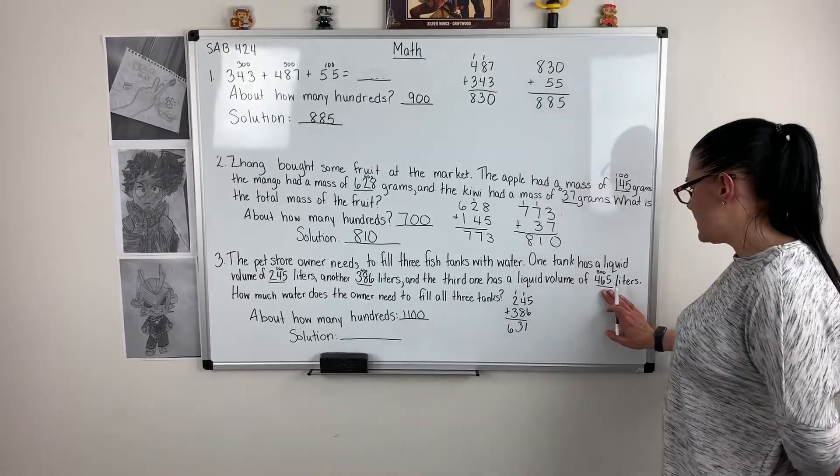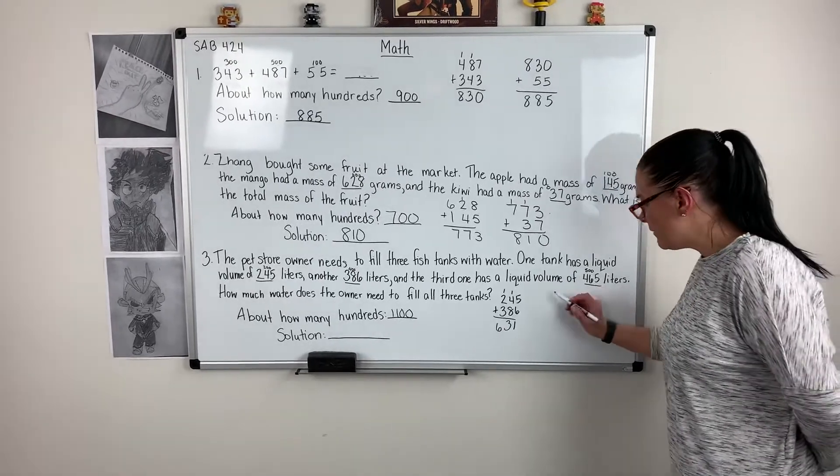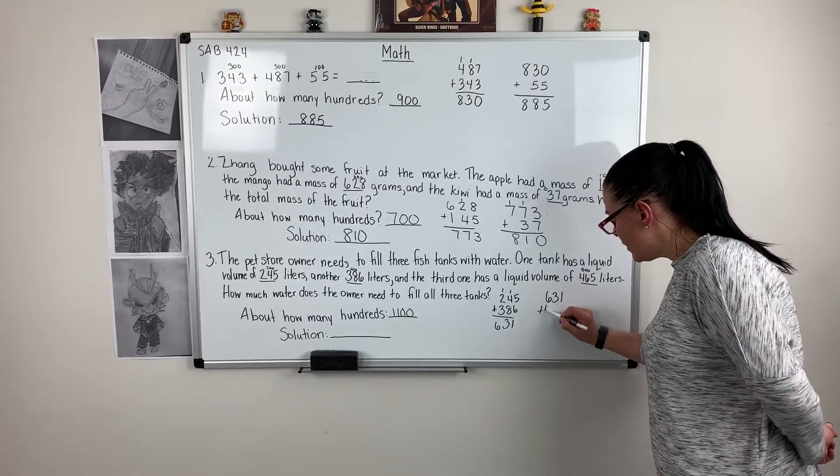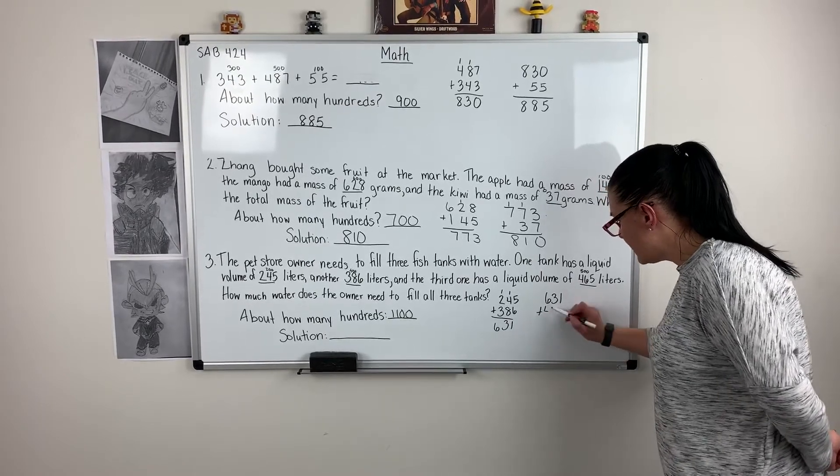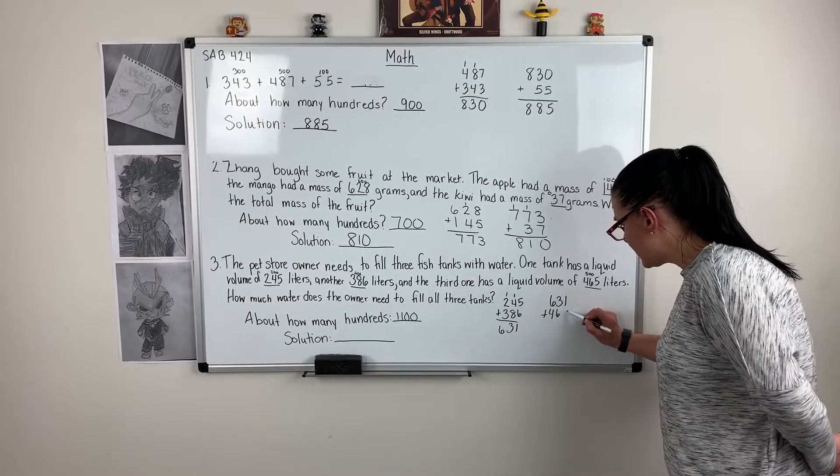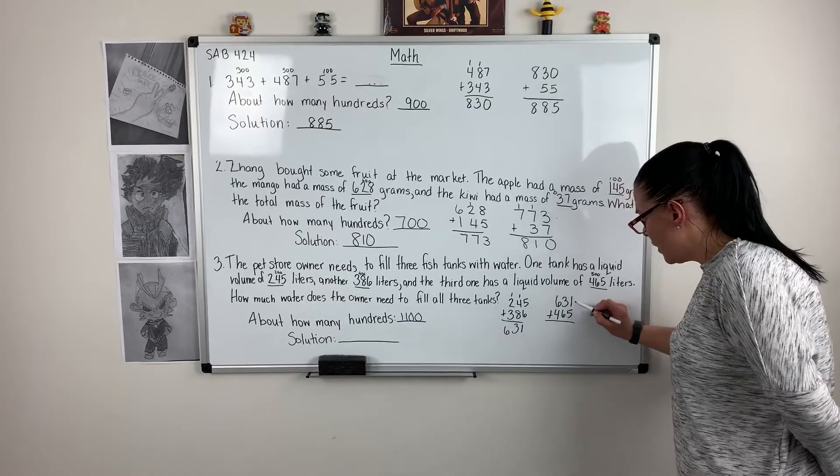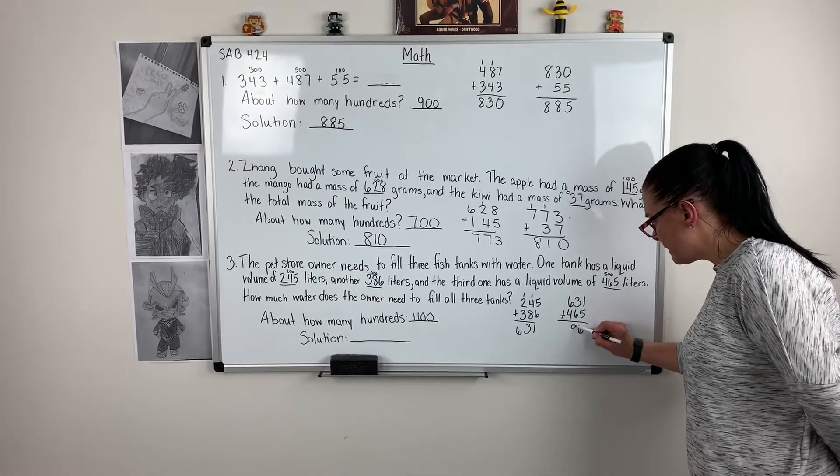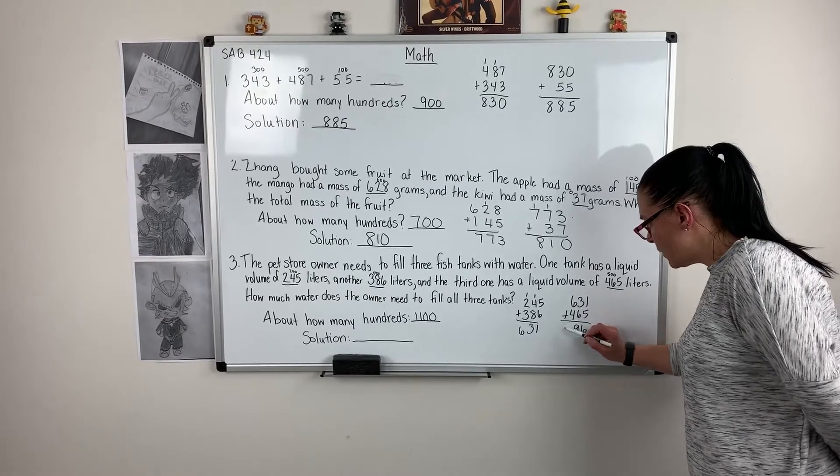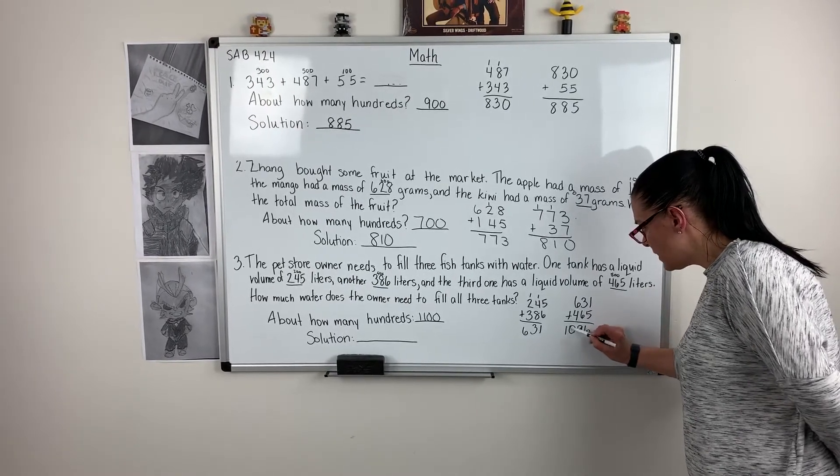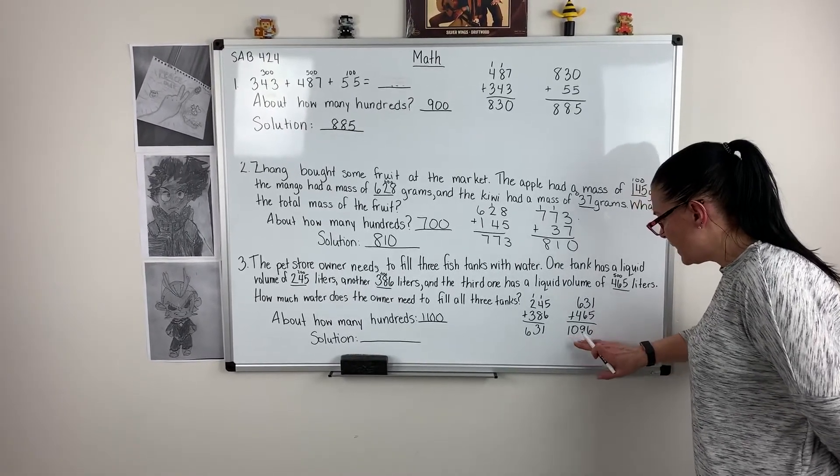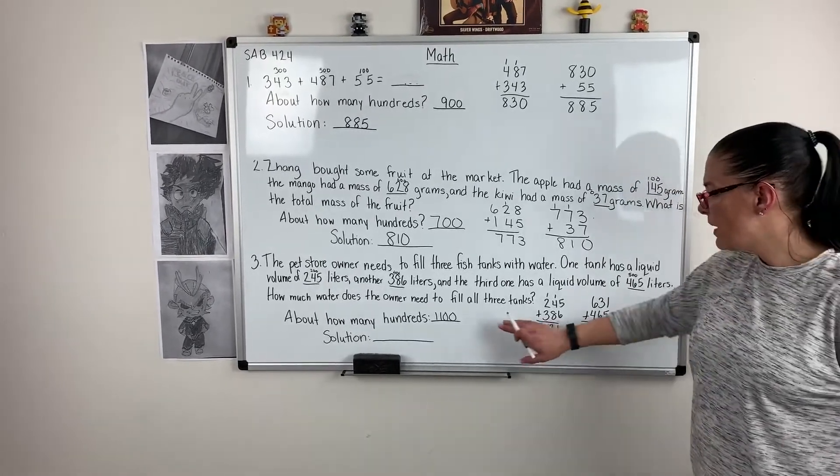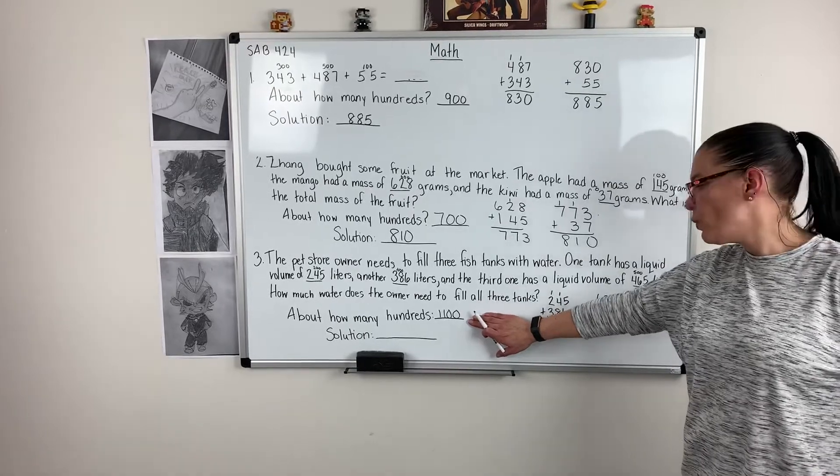I'm not finished because I still need to add my 465. So I'm going to take my total from my previous number plus my 465. 1 plus 5 is 6. 3 plus 6 is 9. 6 plus 4 is 10, so that goes into my thousands place. 1,096. When I round it to my nearest hundred, it gives me 1,100.